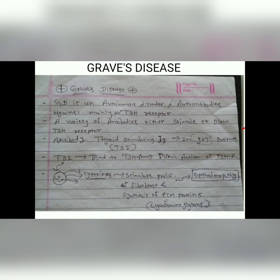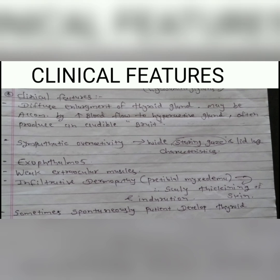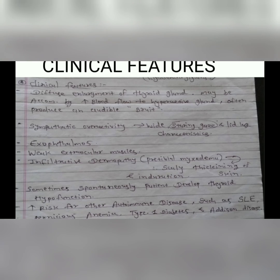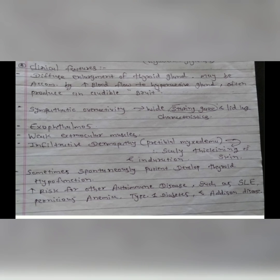Let's talk about clinical features. First, there is diffuse enlargement of the thyroid gland, which may be accompanied by increased blood flow to the hyperactive gland, often producing an audible bruit. Due to increased T3/T4 levels, there is sympathetic overactivity. The patient presents with wide staring gaze, lid lag, and importantly exophthalmos with weak extraocular muscles. There is also infiltrative dermopathy like pre-tibial myxedema.